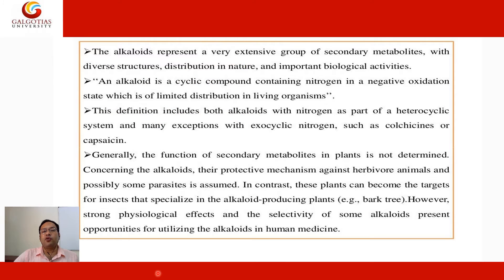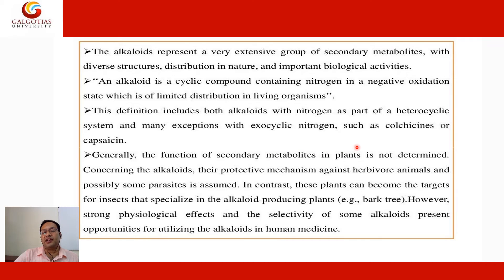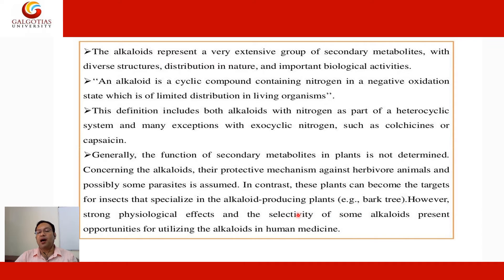Alkaloids represent a very large group of secondary metabolites with diverse structures, distribution in nature, and important biological activity. An alkaloid is a cyclic compound containing nitrogen in a negative oxidation state, with limited distribution in living organisms. This definition includes alkaloids with nitrogen as part of a heterocyclic system and exceptions with exocyclic nitrogen, such as colchicine or capsaicin. Generally, the function of secondary metabolites in plants is not fully determined. Concerning alkaloids, their protective mechanism against herbivores, animals, and possibly some parasites is assumed. However, plants can become targets for insects that specialize in alkaloid-producing plants. The strong physiological effect and selectivity of some alkaloids present opportunities for utilizing alkaloids in human medicine.